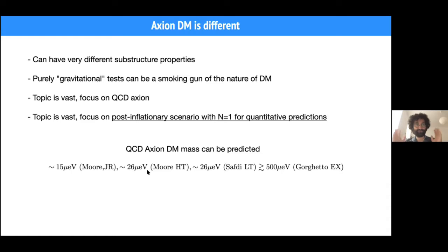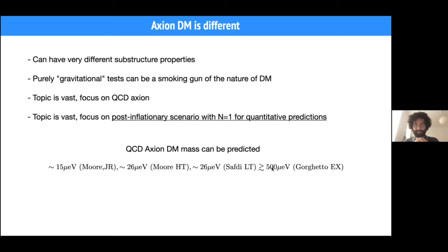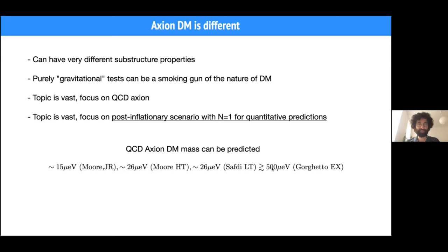This has been done numerically, though it's complicated due to the cosmic string network, leading to different estimates in the literature. The most recent estimates lie in the range of 15 microelectron volts to something over 500 microelectron volts, using different techniques to solve the dynamical range problem of the simulations. This gives us slightly more than one order of magnitude uncertainty, which is already quite good. This points to an axion decay constant of 10^10 to 10^11 GeV, which we'll have in mind for the rest of the talk.